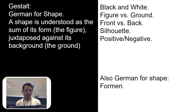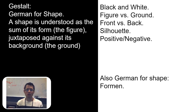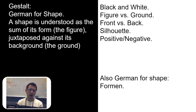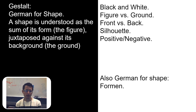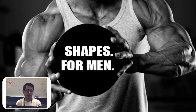We see this in lots and lots of ways. This might be described as black and white, foreground versus background, front versus back, silhouette, subject versus environment, positive, negative — all sorts of things like that. The other German word is formen, which is another German word for shape.